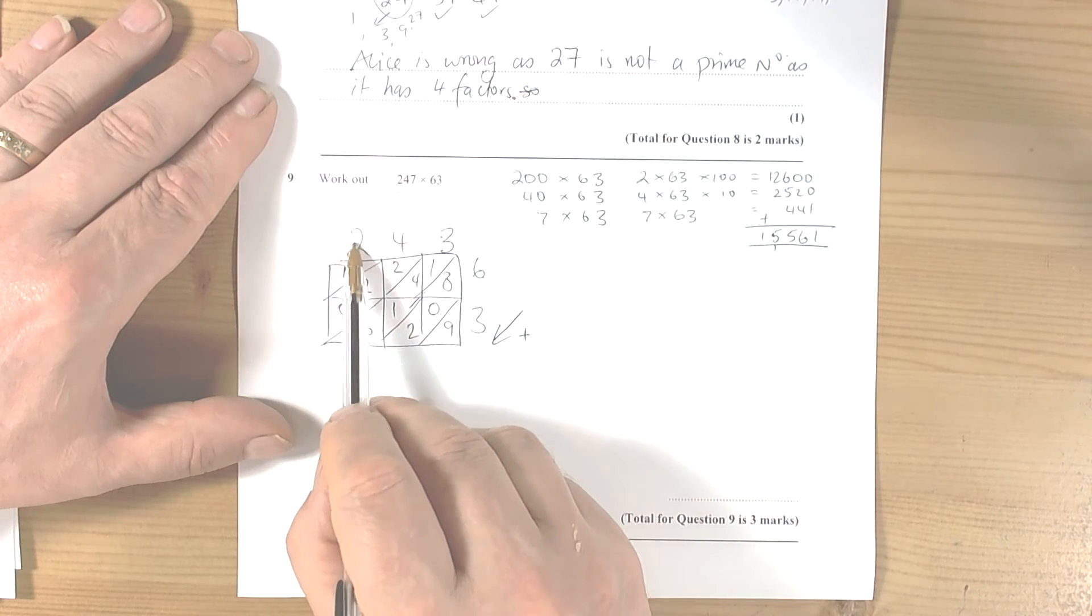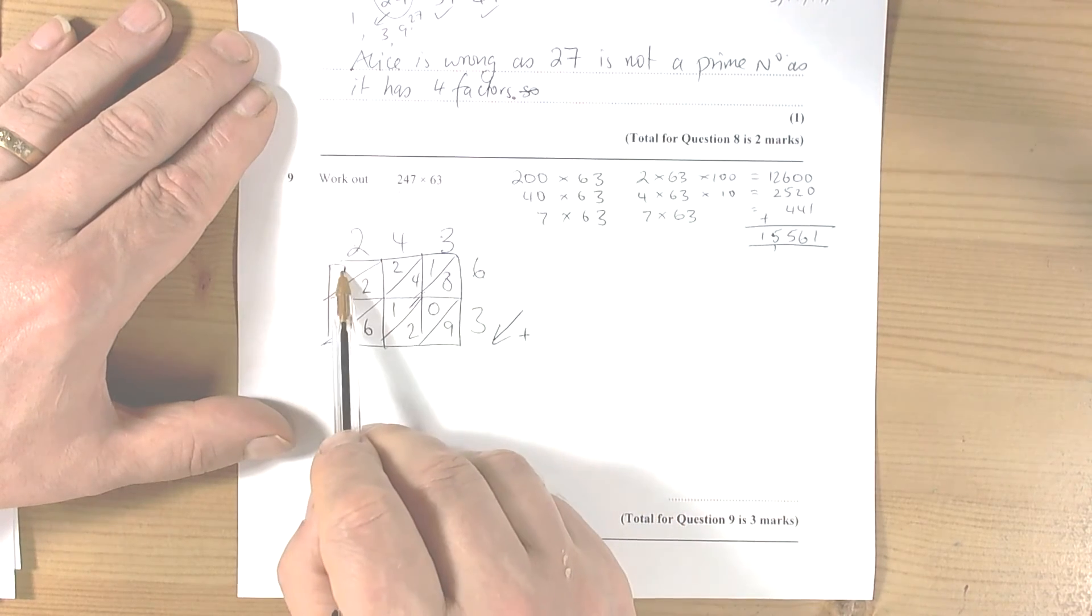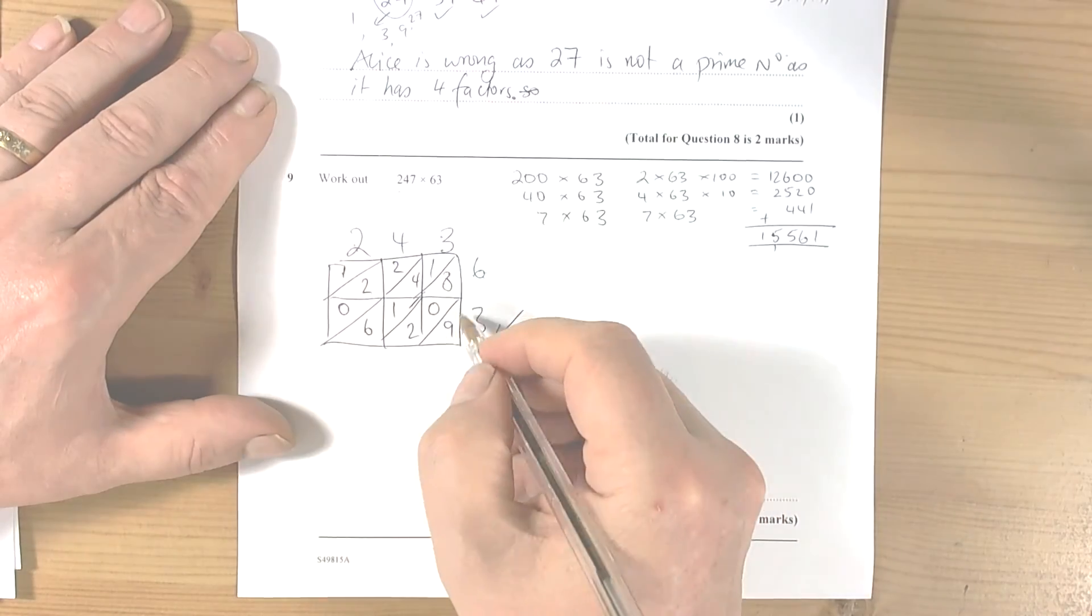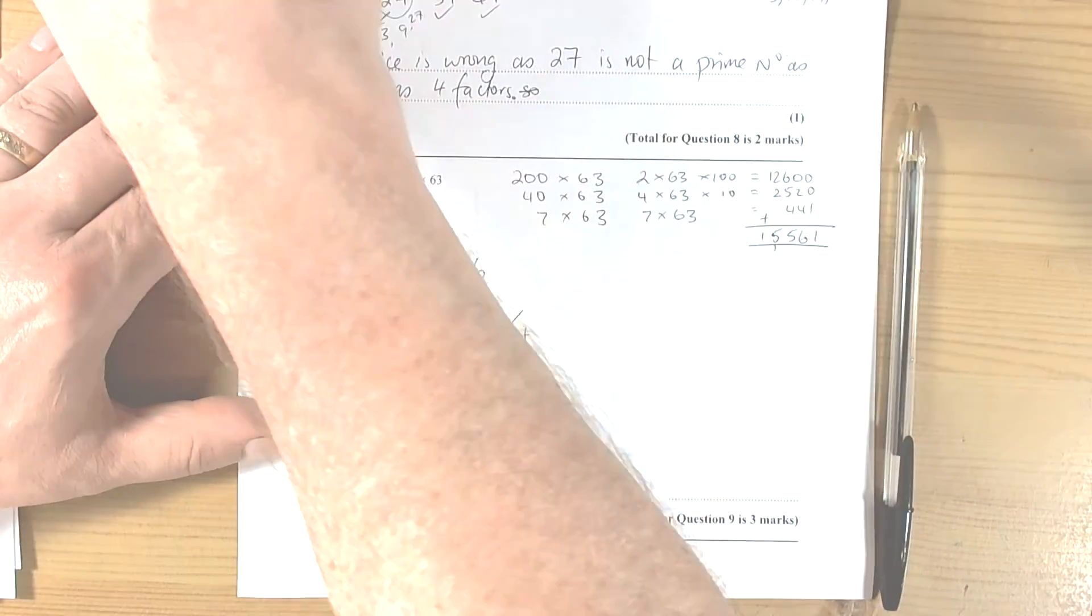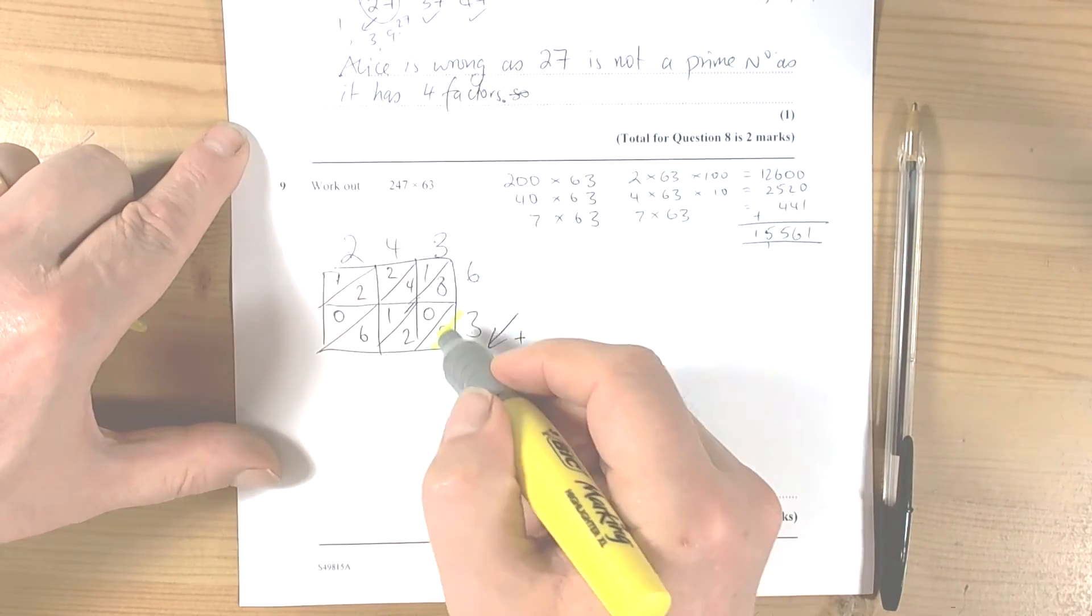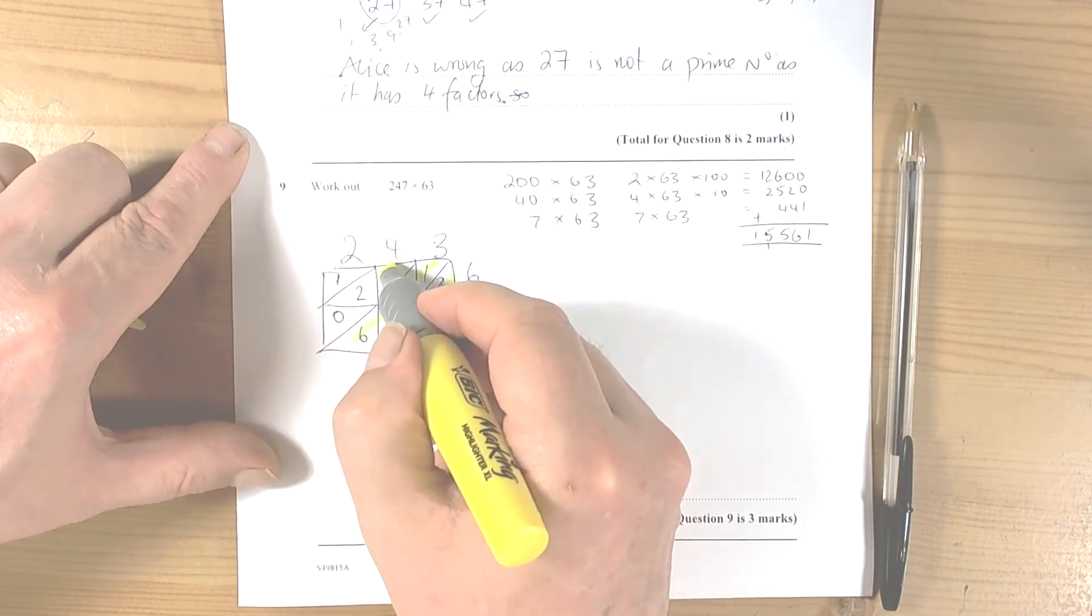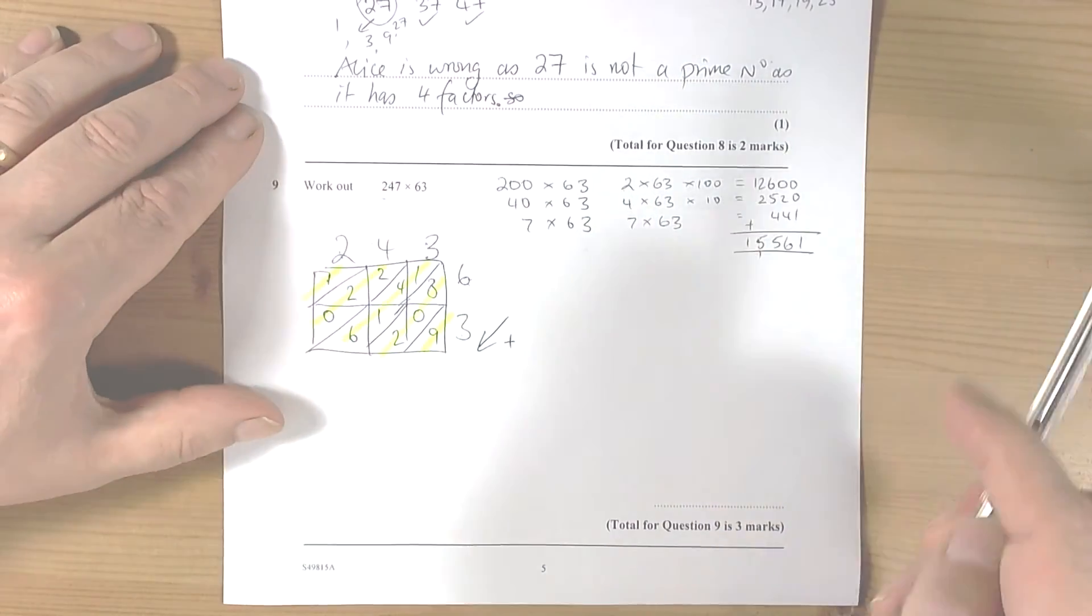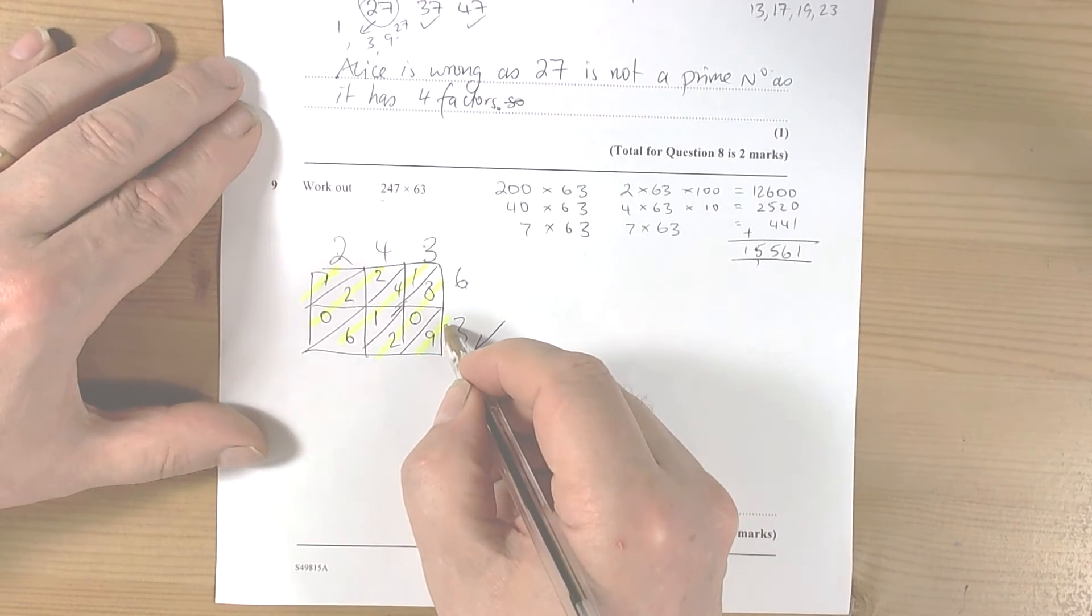And then you add up diagonally. So what that means is basically you're going to add up that and that, that and that, and then that. So you're going to add up diagonally as you do this method, so we get a 9.